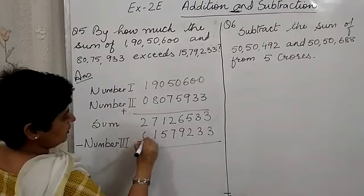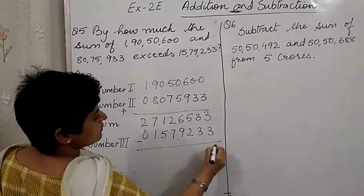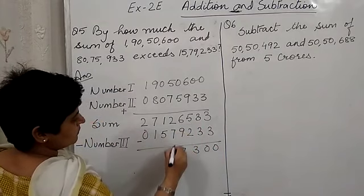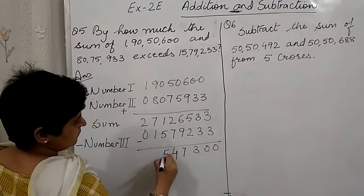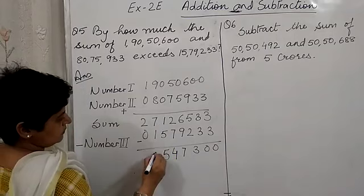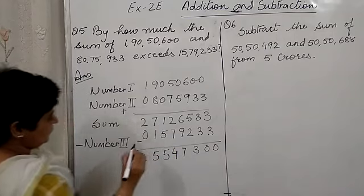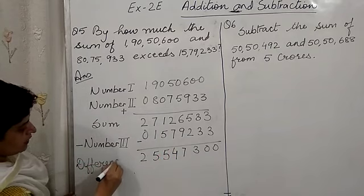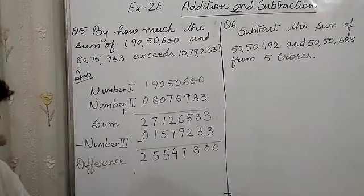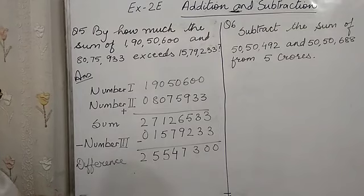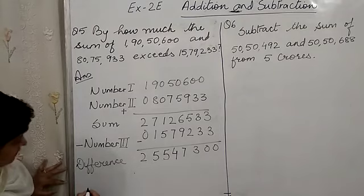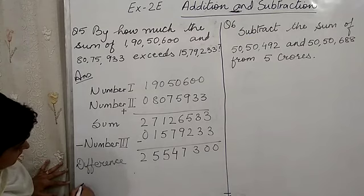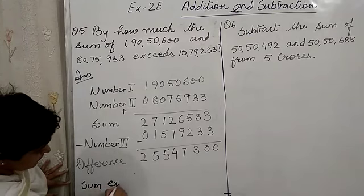So we will subtract here. Again we can put a 0 here. So this is the difference.